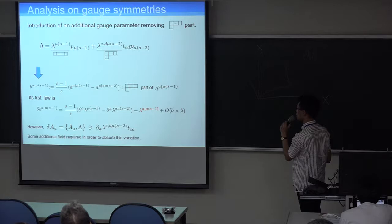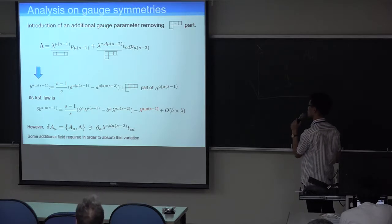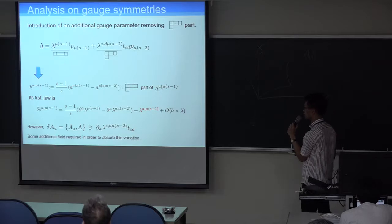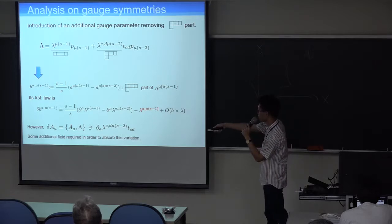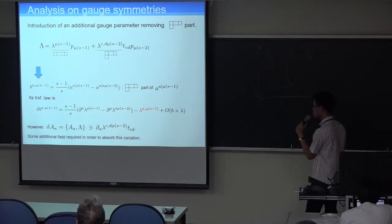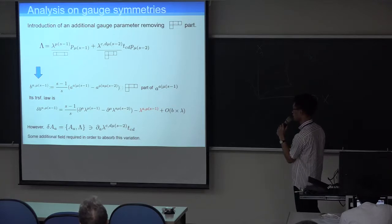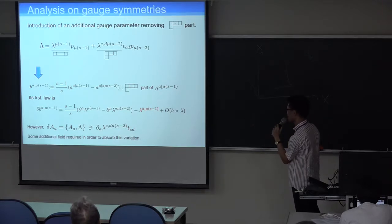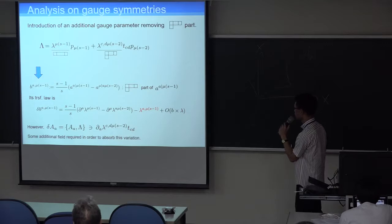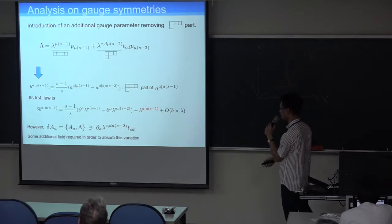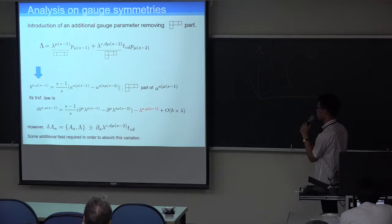Mu 1 to mu s minus 1 is symmetric. But A and mu are not symmetric. So this component contains a hook type part. So we want to remove this hook type part. So I introduce the additional gauge parameter. If we write a hook type part by B, A, mu s minus 1. This transformation rule is written here. And the important point is that we remove this B by this new gauge parameter.